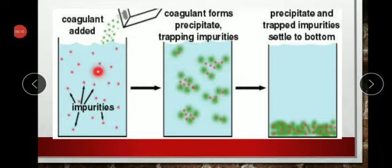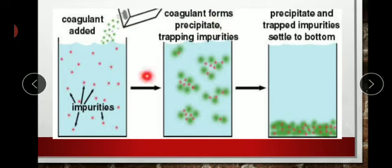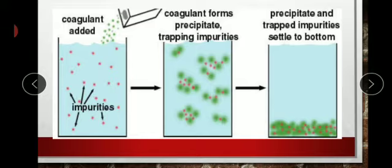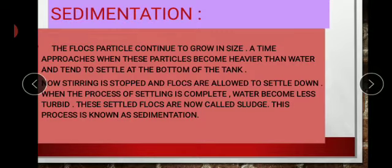You can see in the picture that the impurities are spread throughout the water. After aluminum sulfate is added, it forms flocs. These flocs settle down at the bottom of the coagulation tank.